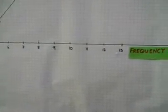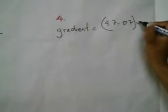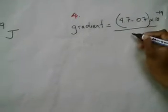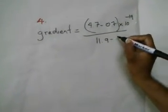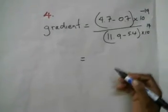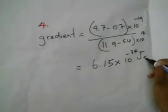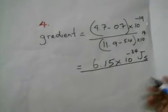The fourth value we are going to find is Planck's constant. In order to find Planck's constant, we will find the gradient of the line by locating two points on the graph. The calculation is (4.7 − 0.7) divided by (11.9 − 5.4) × 10¹⁴, giving an answer of 6.15 × 10⁻³⁴ joule-seconds. This is the value of Planck's constant.